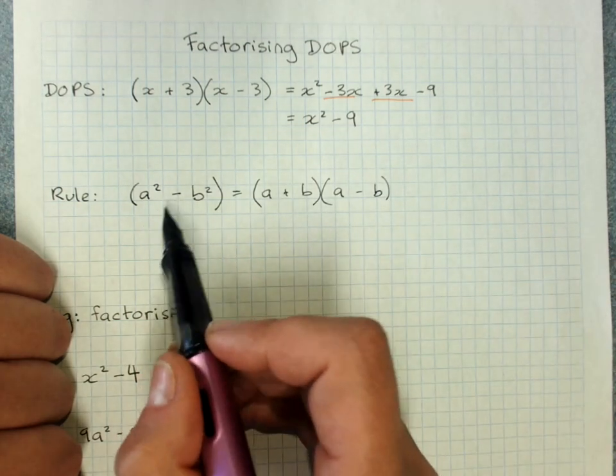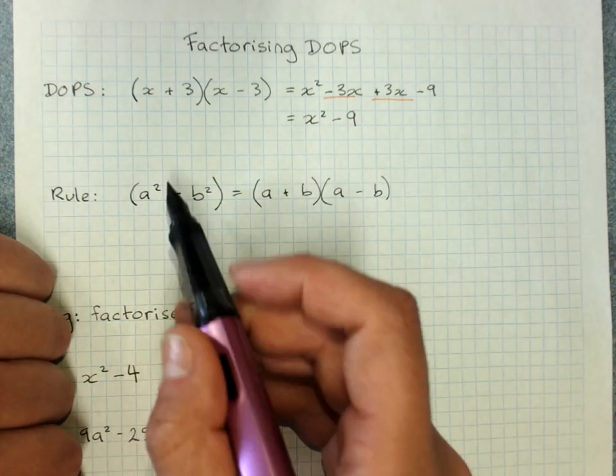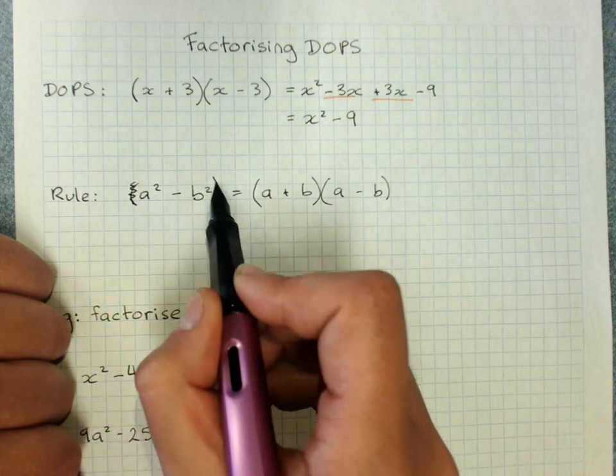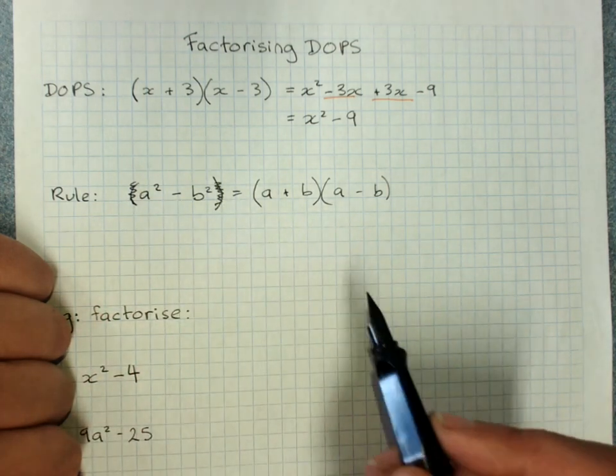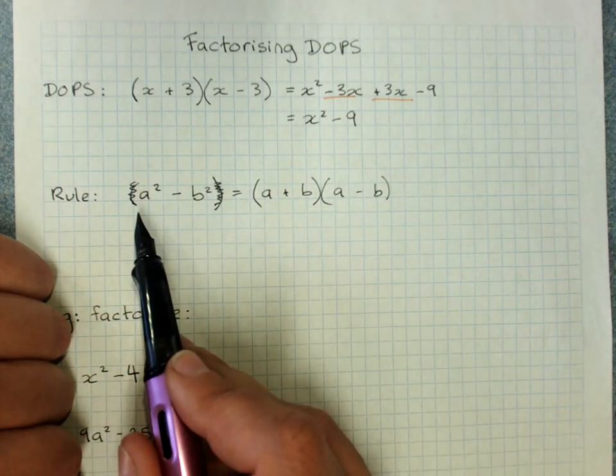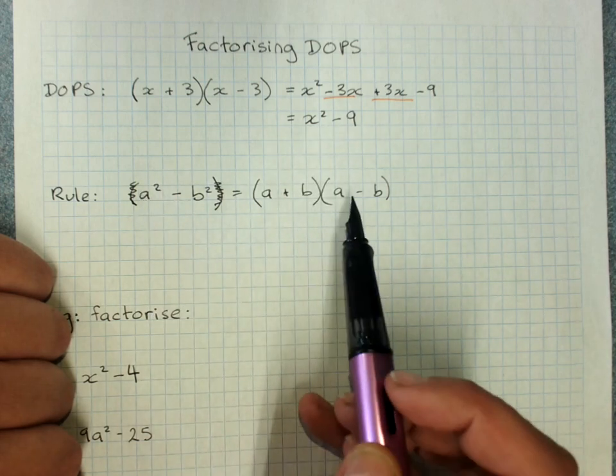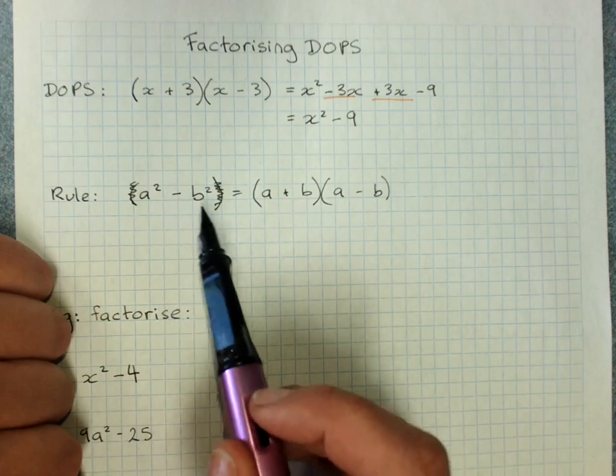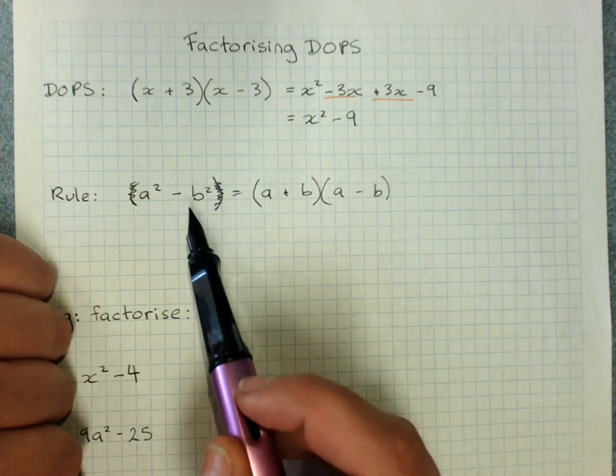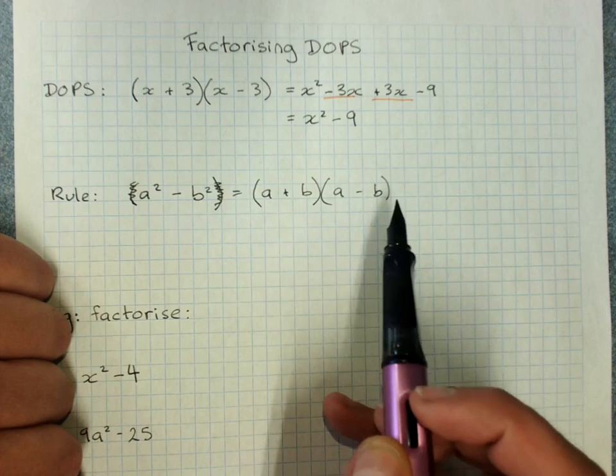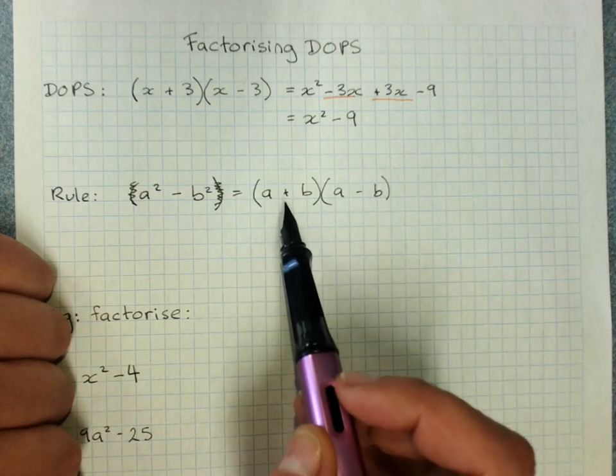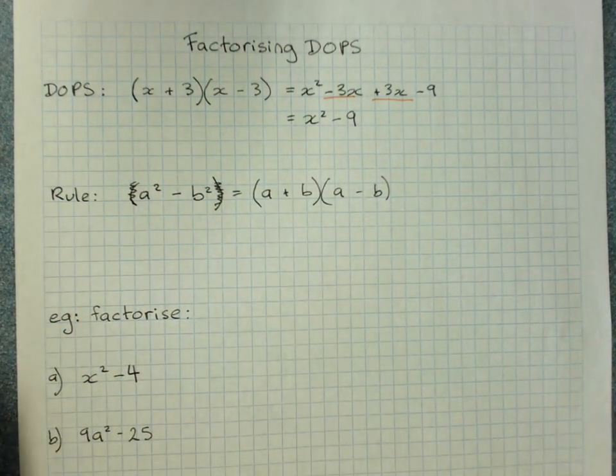So you take the square root. Oops, why did I even put that in brackets? I am sorry. You take the square root of the first term. So a squared, square root is a. You put it at the start of your brackets. Take the square root of the second term. So b squared, square root is b. We put it at the end of the brackets. One is plus, one is minus.